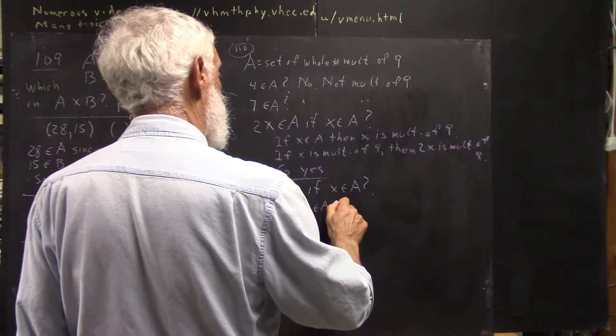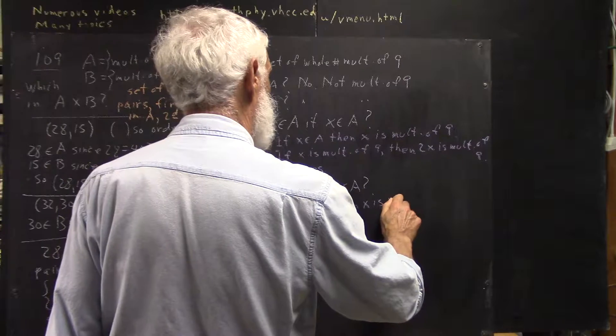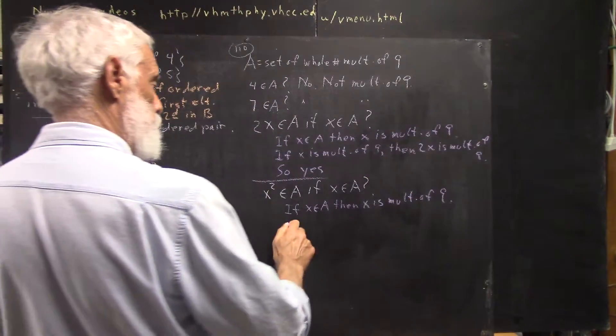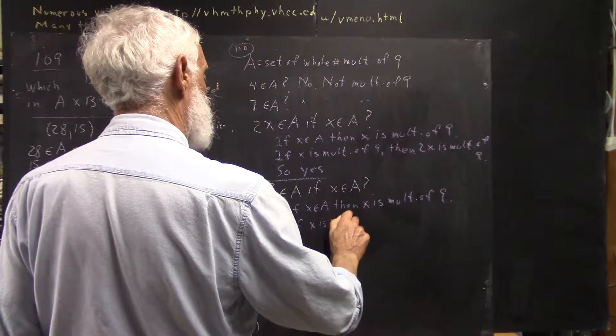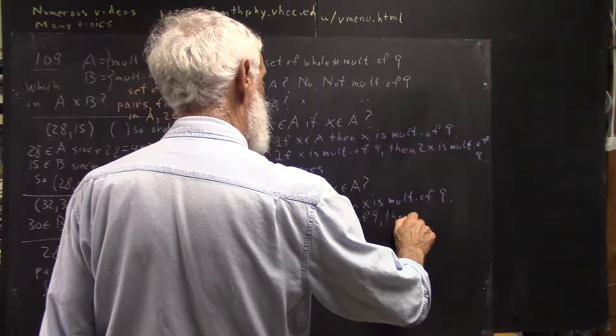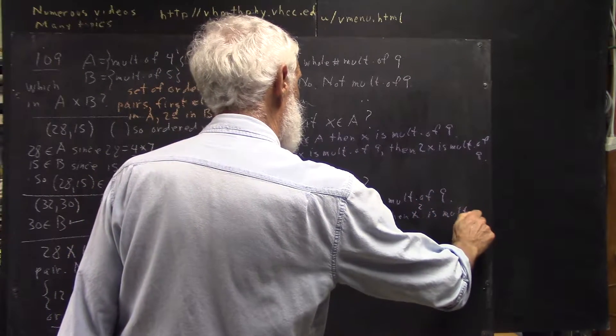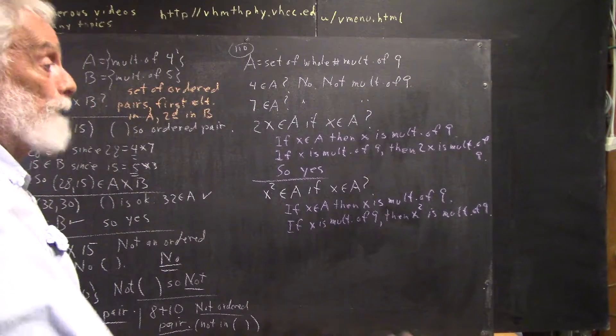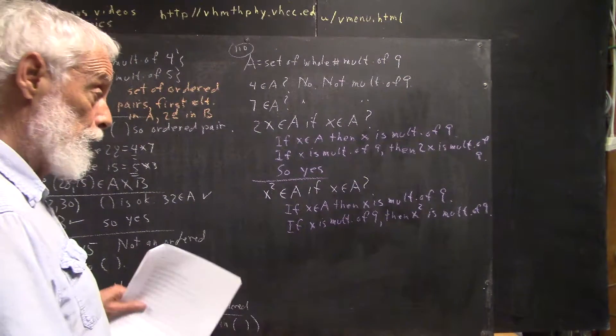If x is in A, then x is a multiple of 9. And x squared is a multiple of 9. Okay? It's 9 times a multiple of 9 multiplied by a multiple of 9. Certainly, it's a multiple of 9.